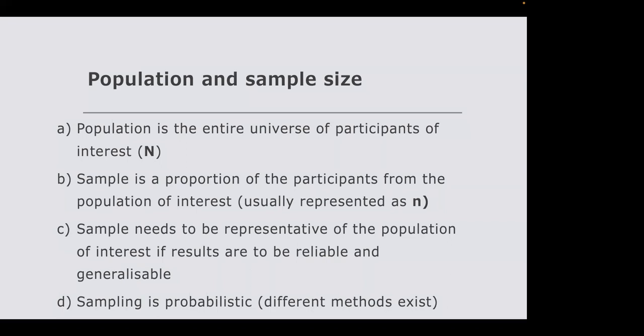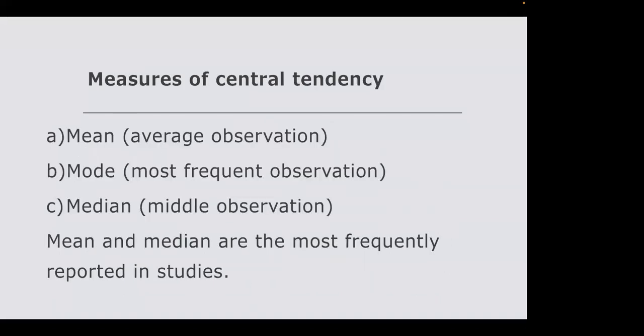Your sample must be representative of the population of interest for results to be reliable and generalizable. For this reason, we use probabilistic sampling techniques. The most common probabilistic sampling method is randomization, used when conducting primary studies where you gather participants, assigning them to a control group and a group with the outcome of interest.